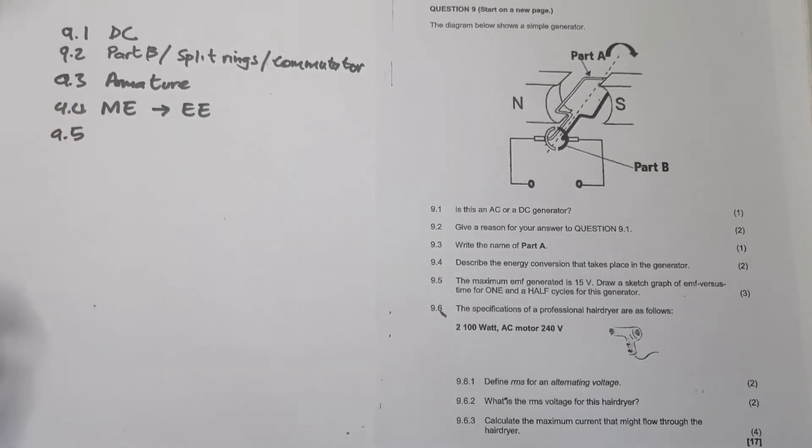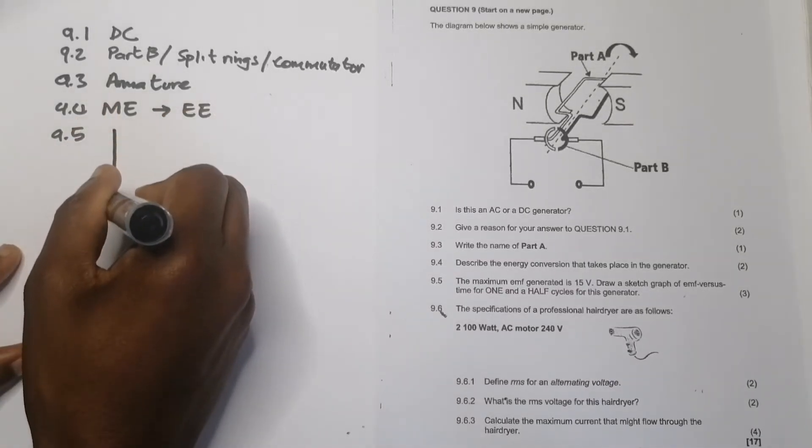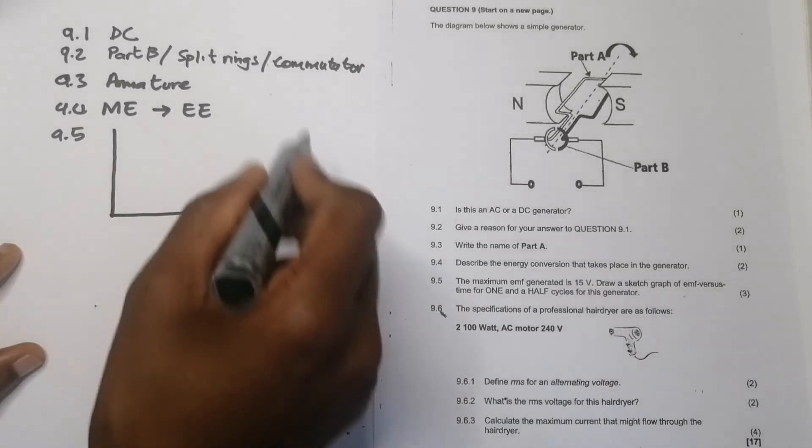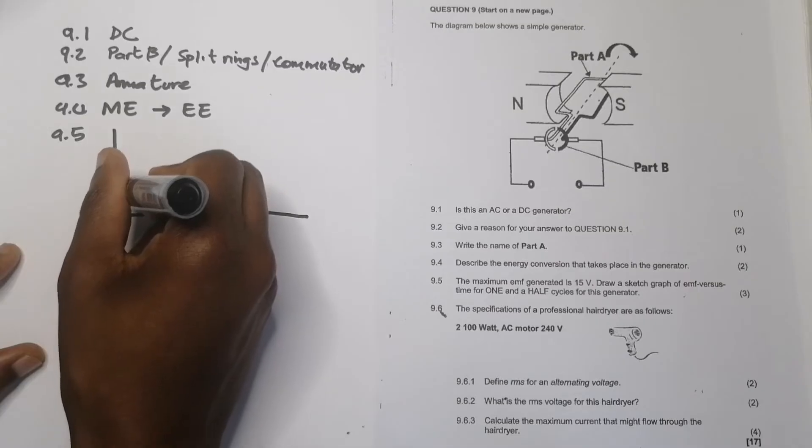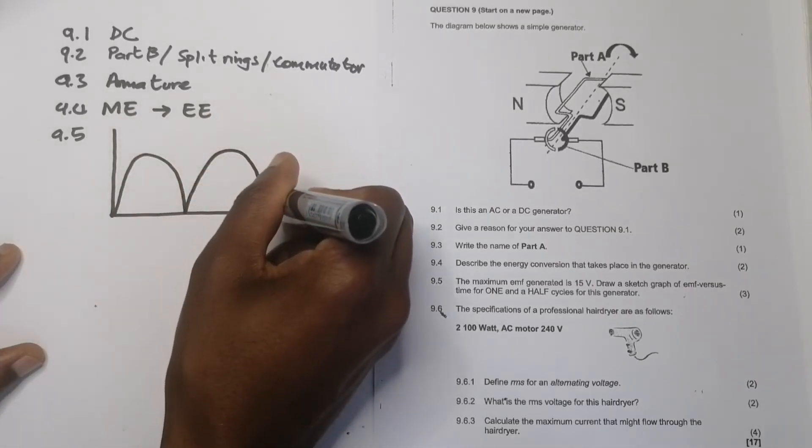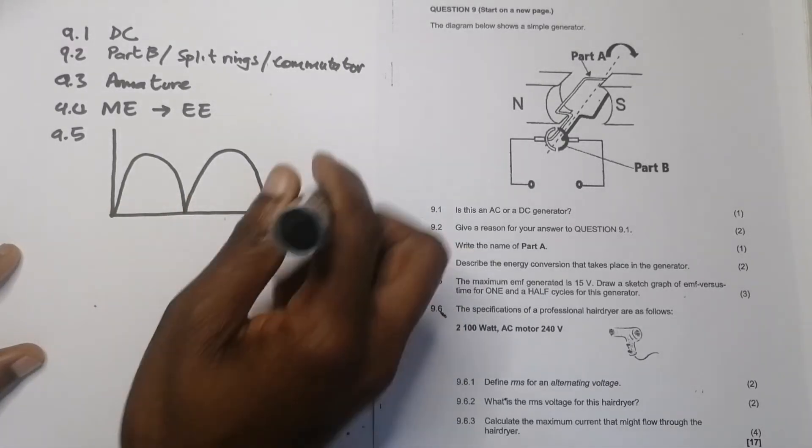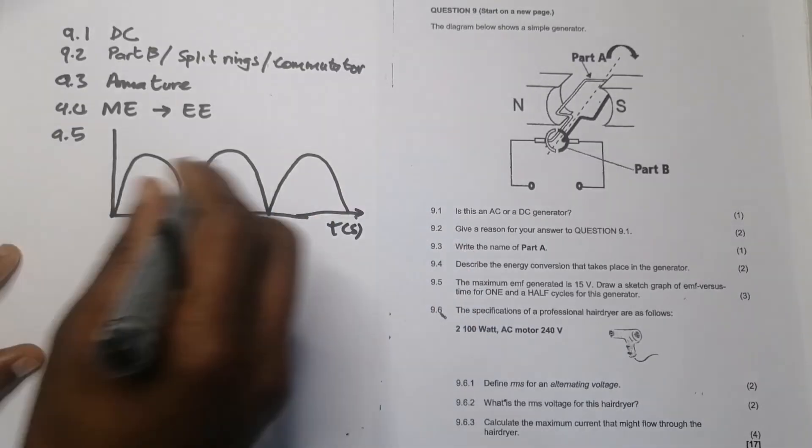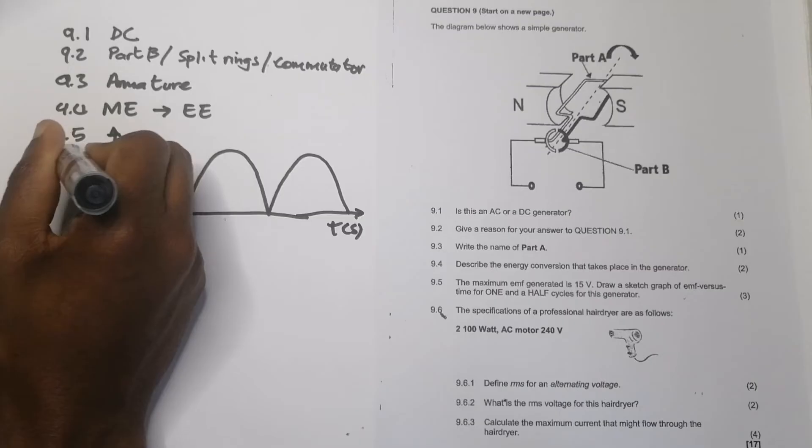So 9.5, they say the maximum EMF generated is 15 volts. They say draw the sketch graph of EMF versus time for one and a half cycles of this generator. So remember that for a DC generator, we're going to draw the instantaneous graph of voltage against time. For AC, remember that it would alternate, but for DC, the graph would look something like this. This would be a full cycle, but they said we should do that in one and a half cycle.